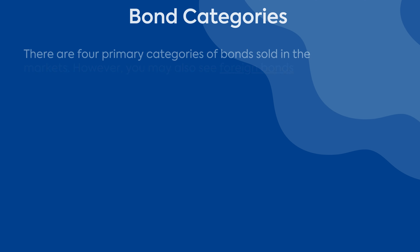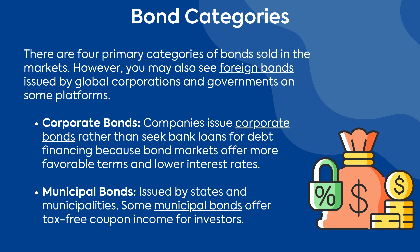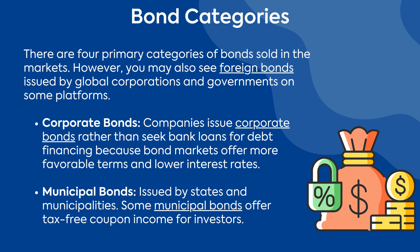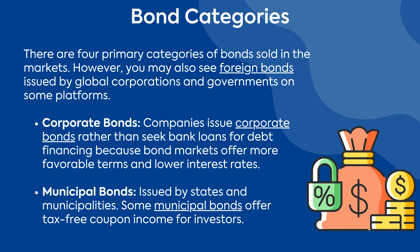Bond categories: there are four primary categories of bonds sold in the markets. However, you may also see foreign bonds issued by global corporations and governments on some platforms. Corporate bonds: companies issue corporate bonds rather than seek bank loans for debt financing because bond markets offer more favorable terms and lower interest rates.